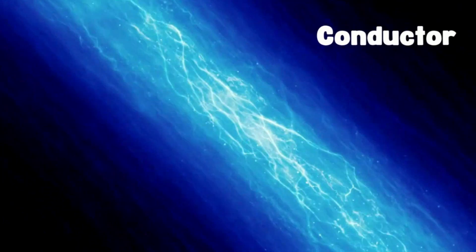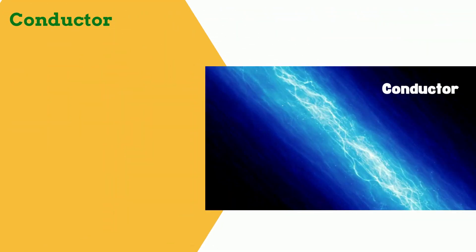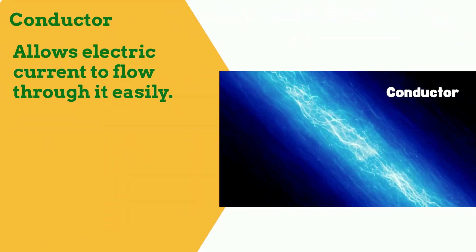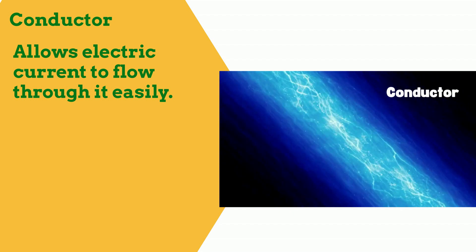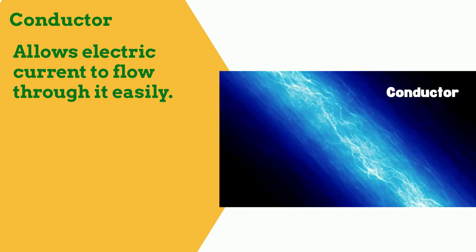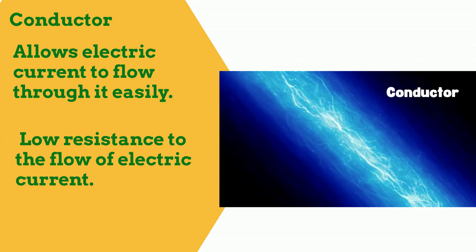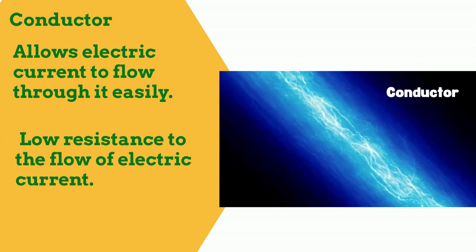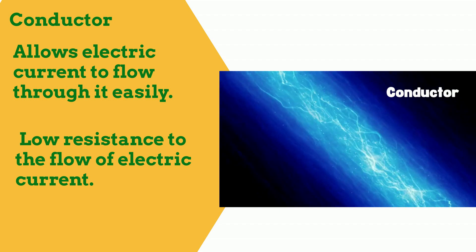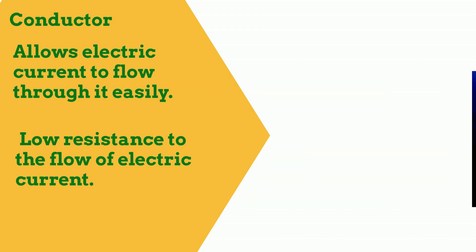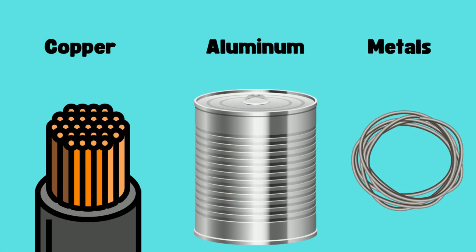A conductor is a material that allows electric current to flow through it easily. It has a low resistance to the flow of electric current. Examples include metals such as copper, aluminum, and most metals.